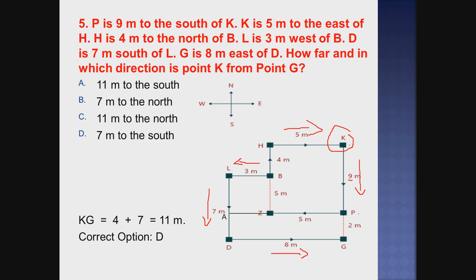Now, the question asks: how far is point K from point G? Point K is the starting position and point G is the last position. K to G - how many meters, in which direction? From K to P is 9 meters south as given. But how far from K to G - we need to find that. From L to D is 7 meters south.